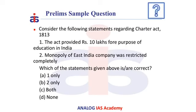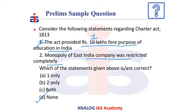Now let us solve a question. Consider the following statements regarding the Charter Act of 1813: Statement 1 — the Act provided 10 lakh rupees for the purpose of education in India; Statement 2 — the monopoly of the East India Company was restricted completely. The correct answer is D, none. As discussed, the Charter Act provided 1 lakh rupees for education, not 10 lakhs — so Statement 1 is wrong. The monopoly of the East India Company was not restricted completely; it maintained its monopoly in the tea trade in India and trade with China. Therefore the correct answer is D, none.